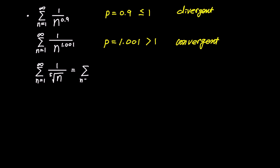What about the infinite sum of 1 divided by the fifth root of n? The fifth root in the denominator can be rewritten as n to the power of 1 over 5. The p-value would be 1 over 5, which is less than 1, so this infinite series diverges.